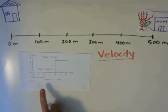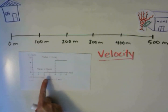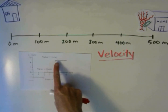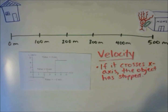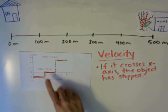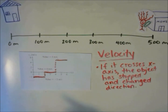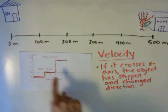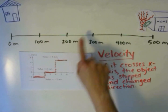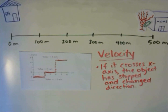If you look at this velocity-time graph, you'll notice that it starts with a negative velocity, then goes to a 0 velocity, and then goes to a positive velocity. When the graph crosses the x-axis, the velocity is equal to 0, which means the object has stopped. The other thing that happens when it crosses the x-axis is that it has stopped and changed direction. So here, it had a negative velocity — meaning the object was moving in one direction — then reached 0 and stopped, then had a positive velocity, meaning it changed direction. Any time you cross the x-axis on a velocity-time graph, the object has stopped and changed direction.